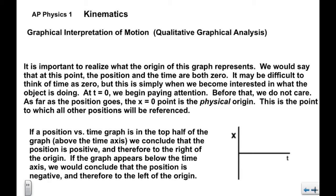It's important to realize what the origin of this graph represents. At that point, both position and time are zero. Time equals zero is simply when we become interested in what the object is doing — when we begin paying attention. The x equals zero point is the physical origin, and all other positions are referenced from it. If the graph is in the top half, the position is positive, or to the right of the origin. If below the time axis, the position is negative, or to the left of the origin.